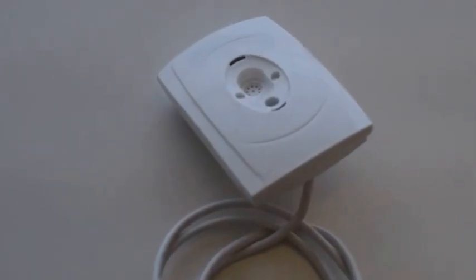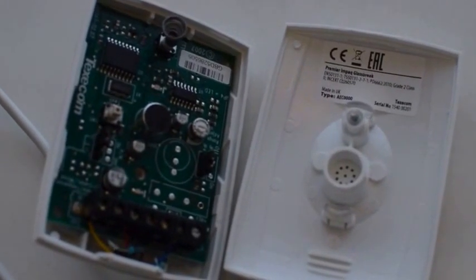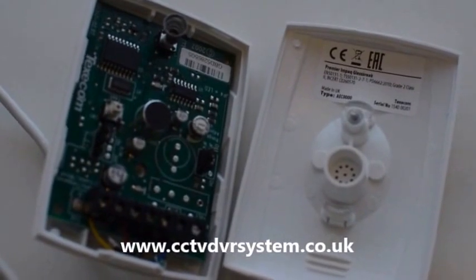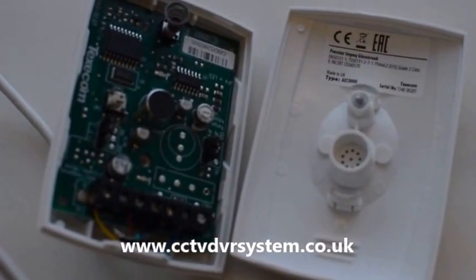This is a Texacom glass breaker. You can see I've opened this glass breaker, this is a Texacom glass breaker grade 2. You can use it for a Texacom panel. You can also use it for any panels as long as you get your resistor value correct. This can work with any panels.